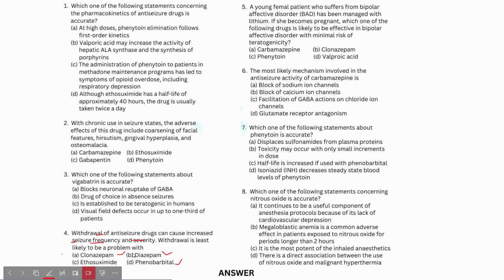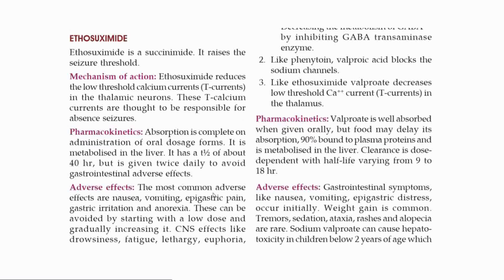Ethosuximide works differently - it modifies impulse frequency by blocking low threshold T-type calcium currents. This is its mechanism of action. T calcium current reduction is how it works. It's used for absence seizures. The answer is ethosuximide.